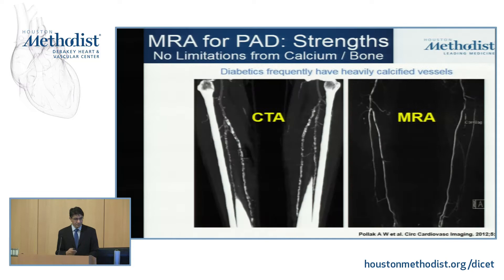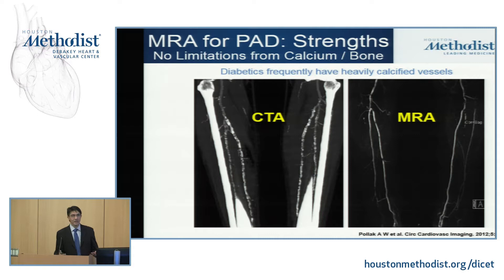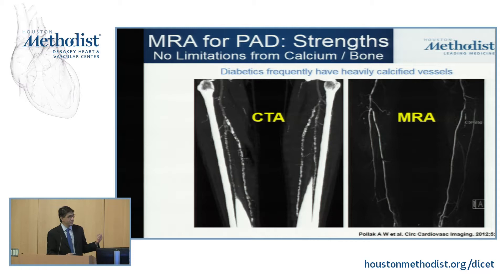MRI's calcium blindness is really helpful. If you have extremely calcified vessels, we have no trouble seeing the lumen and making correct diagnoses. With CT, calcium blooming makes it very difficult to diagnose stenosis severity. With MRA, what you're imaging is the actual lumen of the vessel — wherever you see abrupt termination, you can be certain there is a significant stenosis present.